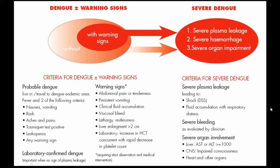Probable Dengue means any person who lives in or travels to a Dengue endemic area, shows fever, and any two of the following criteria: nausea and vomiting, rash, aches and pains, tourniquet test positive, leukopenia, any warning sign, and laboratory confirmed Dengue.